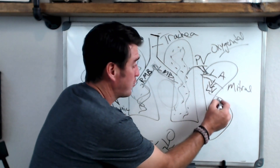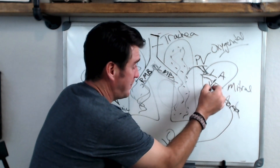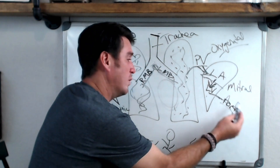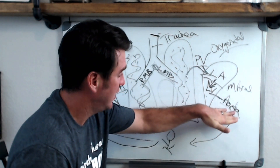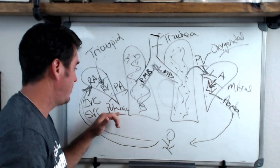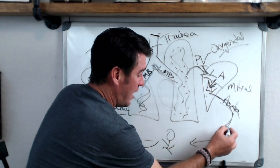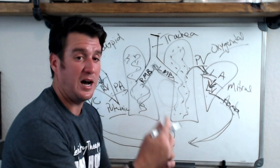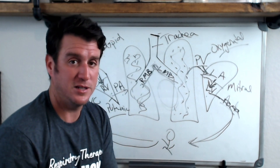Once it passes through the mitral valve to the left ventricle, it goes out through the aorta via the aortic valve. The aorta comes through the aortic valve; the pulmonary artery comes through the pulmonic valve. Then it goes out to systemic circulation so that the oxygen can be consumed by the tissues.